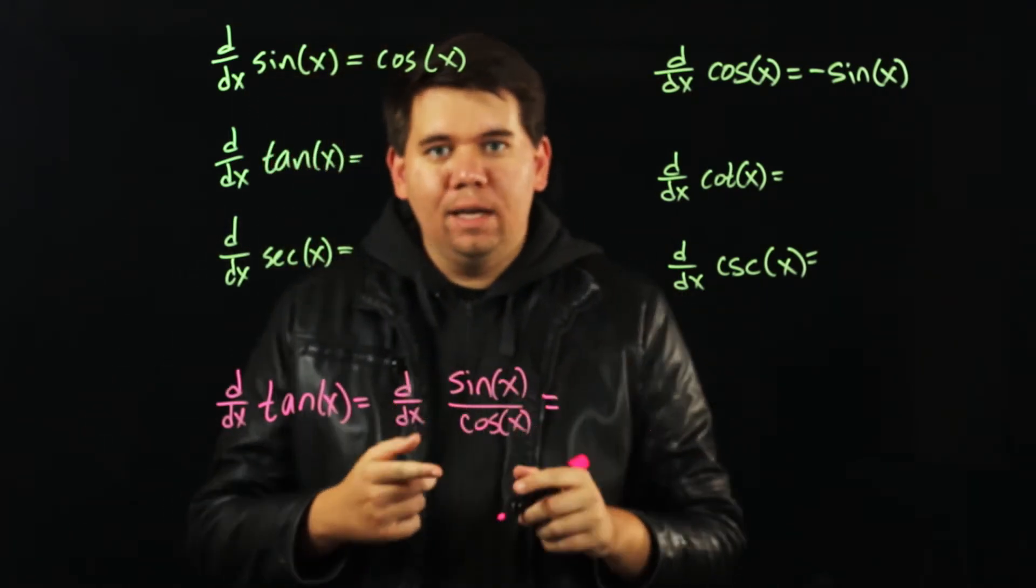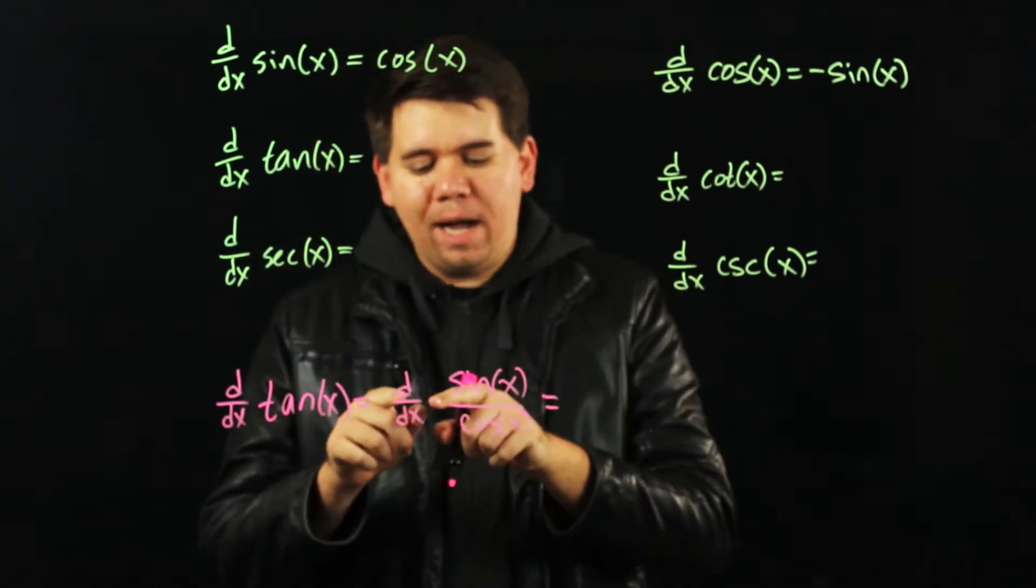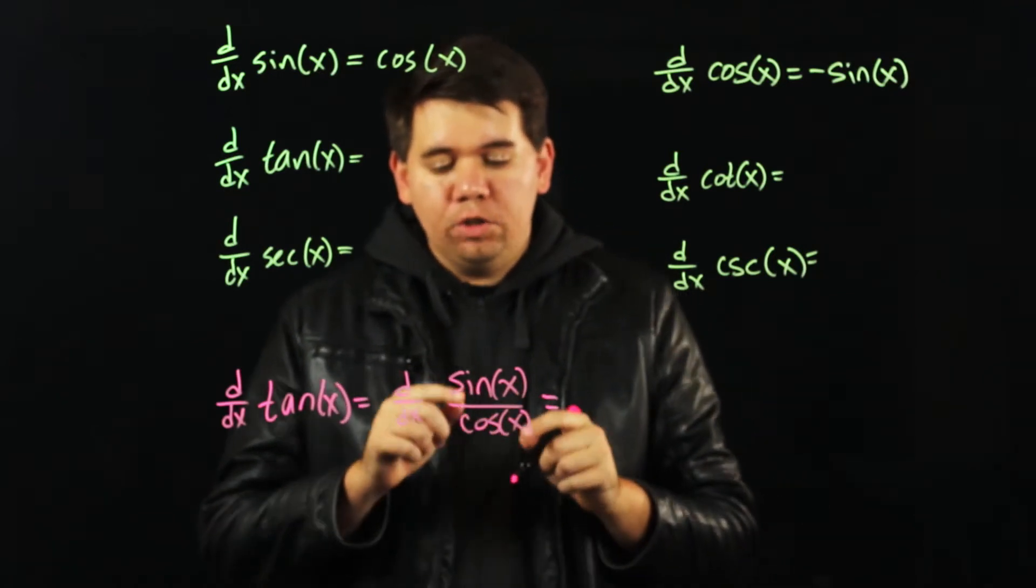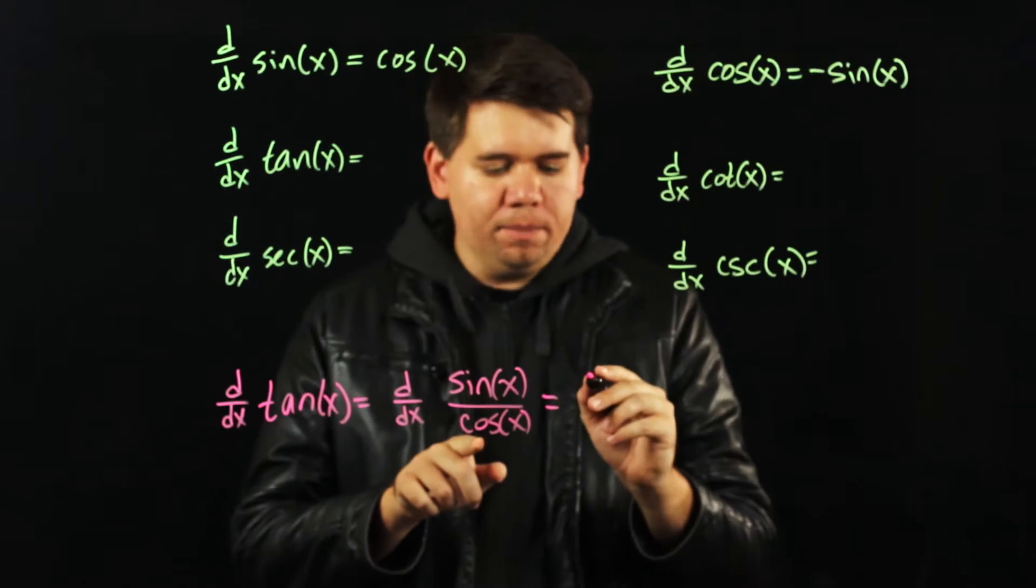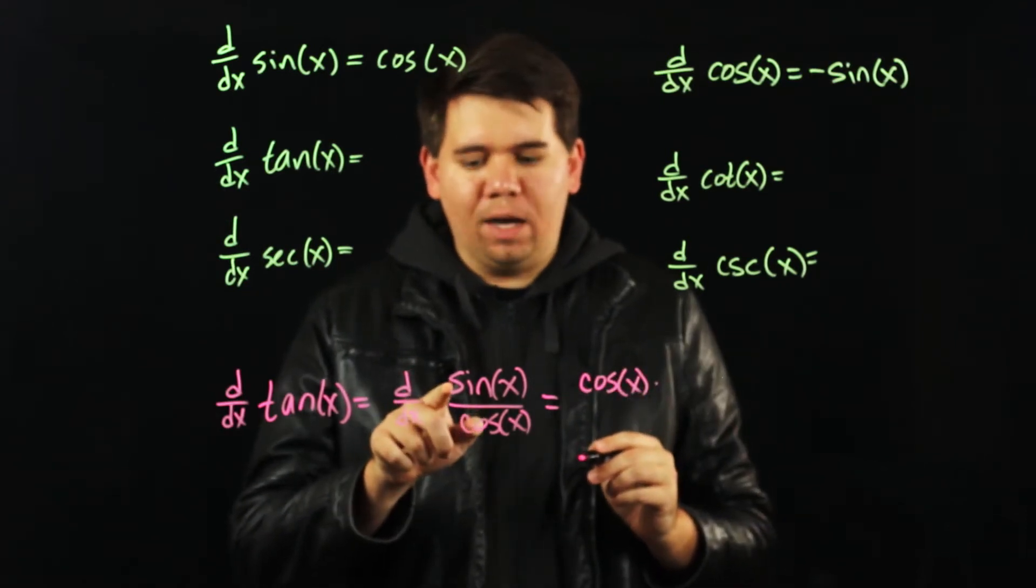How do I do that? I need to use the quotient rule. Remember it's not just the derivative of the top divided by the derivative of the bottom. Instead I need to do the quotient rule that says hold the bottom, so that would be cosine of x, times the derivative of the top.